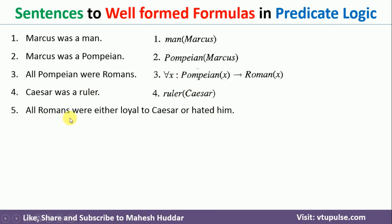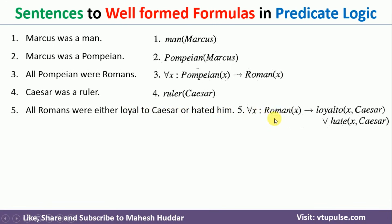Consider the next example: 'All Romans were either loyal to Caesar or hated him.' Because we have 'all' here, we take for all X and consider Roman(X). If X is a Roman, then they are either loyal to Caesar or hated him. We have two predicates: loyalTo(X, Caesar) or hate(X, Caesar). So this is written as: ∀X: Roman(X) → loyalTo(X, Caesar) ∨ hate(X, Caesar).